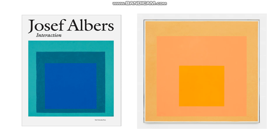Welcome. This is the lecture for the Design and Color Theory class for Unit 3. As we talked about in class and looked at some images, a lot of this unit — Unit 3 — and a whole lot of the next unit, Unit 4, is going to be based on some of the ideas of Joseph Albers.